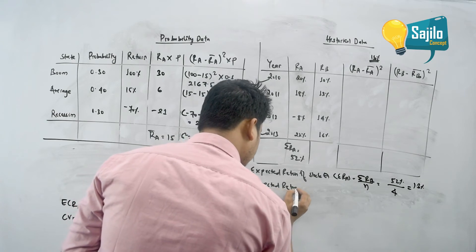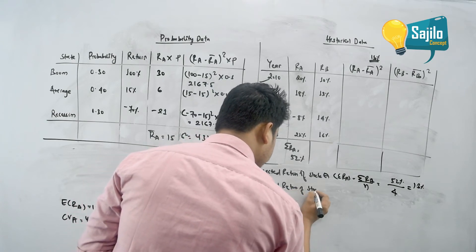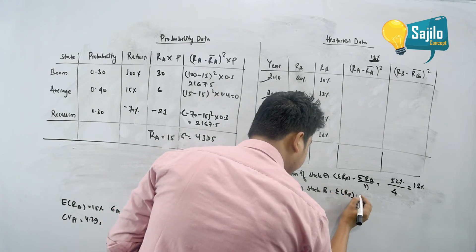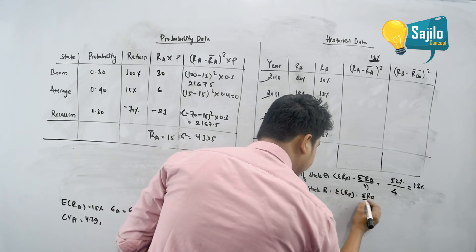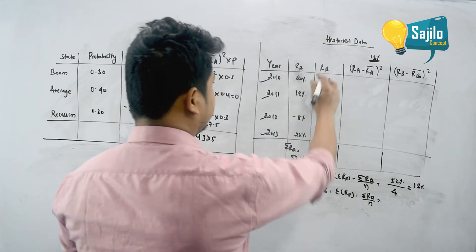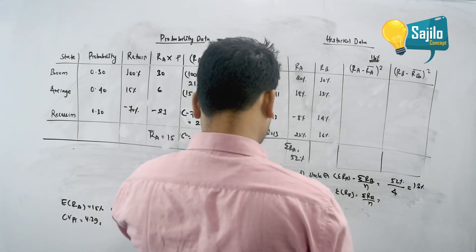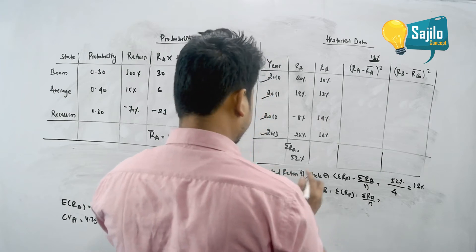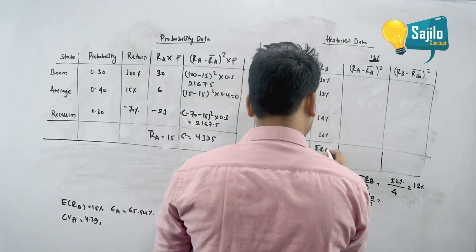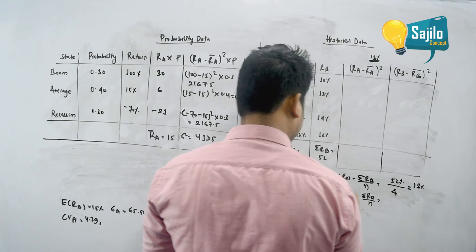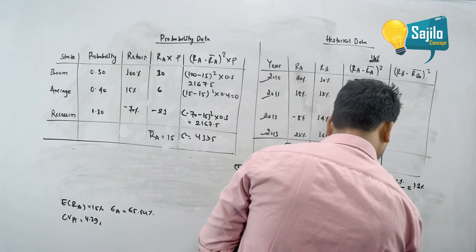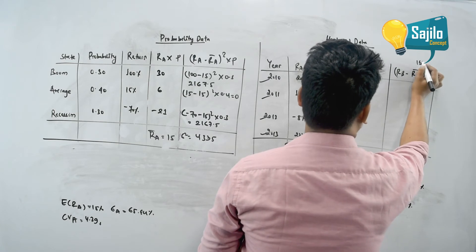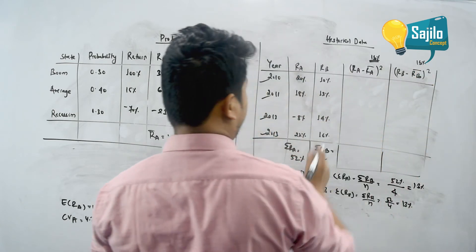Expected return of stock B: E(R_B) equals summation R_B divided by n. That is 10 plus 2 plus 14 plus 16 equals 52. So E(R_B) equals 52 divided by 4 equals 13 percent.